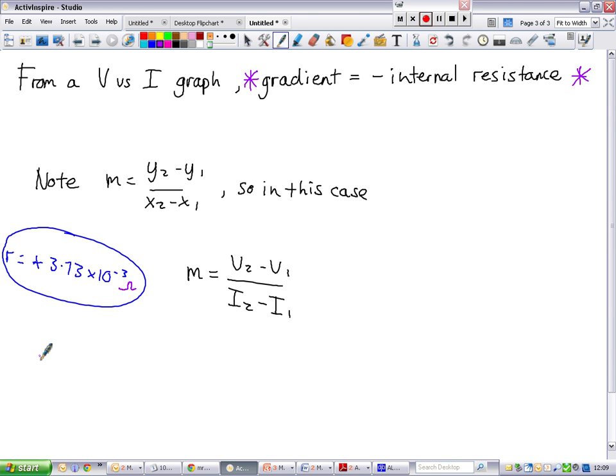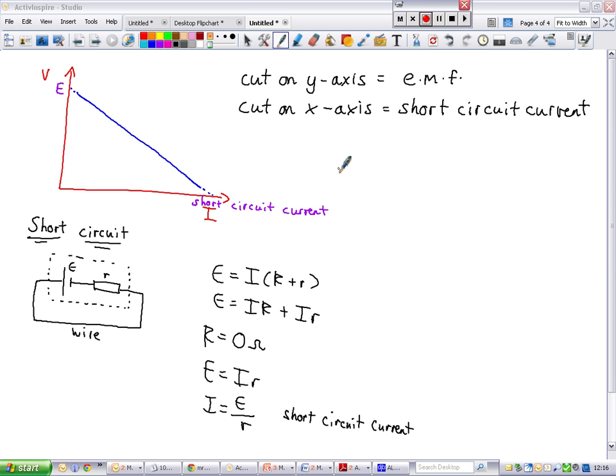So we've now got the gradient that's given us internal resistance. We've still got two things we can calculate from that graph. That's EMF and short circuit current. So this is how we calculate the two other quantities that we were looking to calculate.